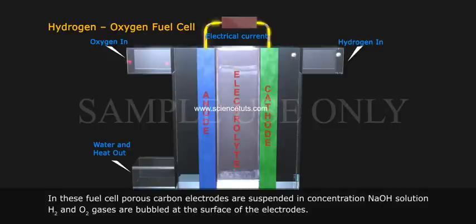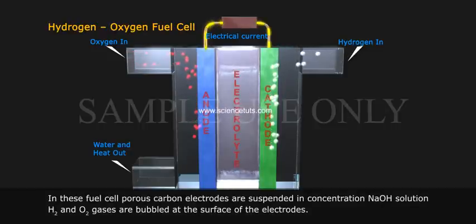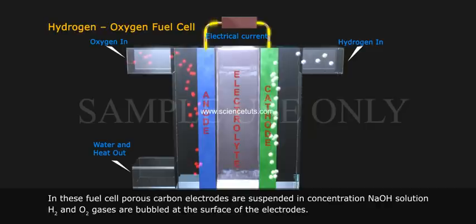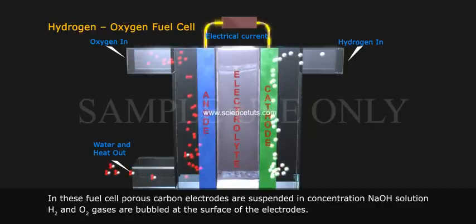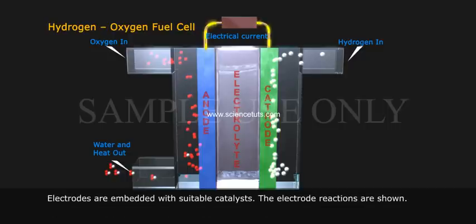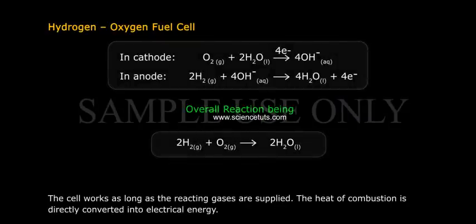A. Hydrogen-oxygen fuel cell: In this fuel cell, porous carbon electrodes are suspended in concentrated KOH solution. H2 and O2 gases are bubbled at the surface of the electrodes, which are embedded with suitable catalysts. The electrode reactions are shown. The cell works as long as the reacting gases are supplied, and the heat of combustion is directly converted into electrical energy.